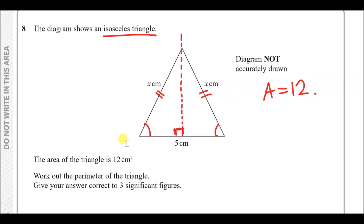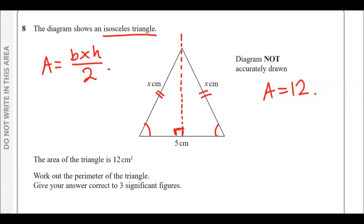To find the perimeter we first need the unknown lengths. The area formula for a triangle is base × height ÷ 2. The base is 5 and we don't know the vertical height h. Setting up the equation: 12 = (5 × h) / 2.